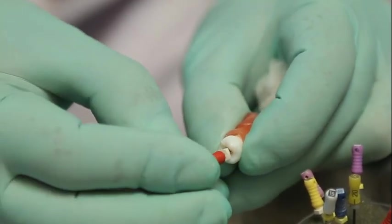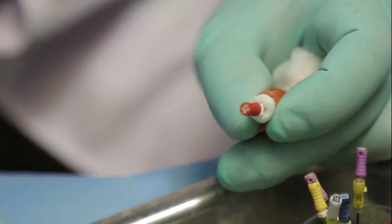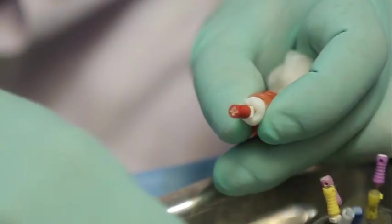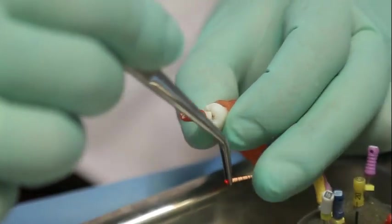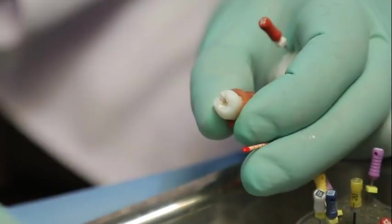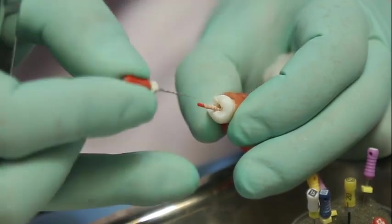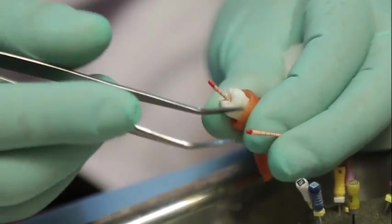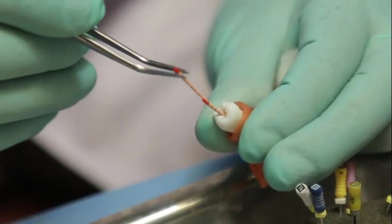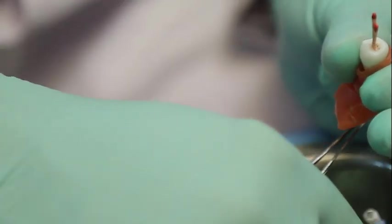Then again you have to fill the coronal space using lateral condensation. Here you can use 4% size 25 GP because the coronal space will be a little bit larger. So you can easily fill it with 4% size 25 GP.